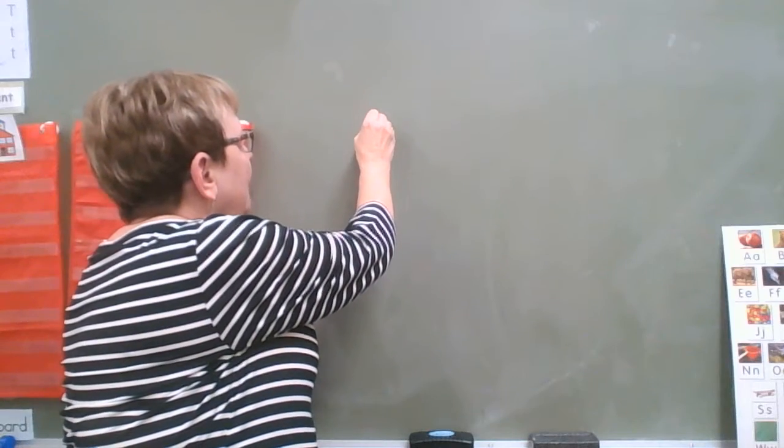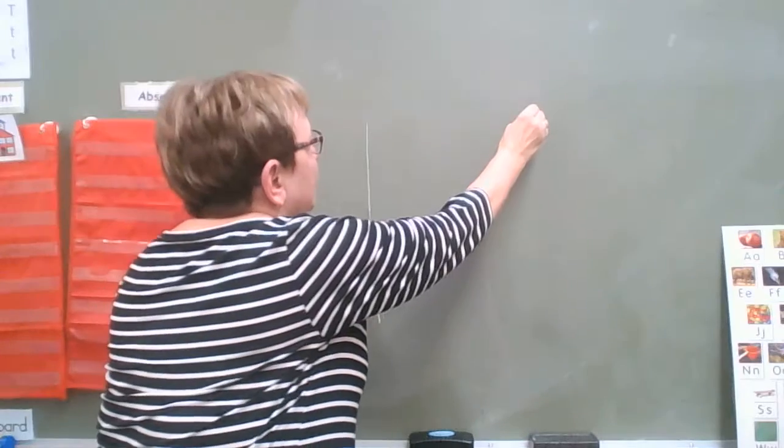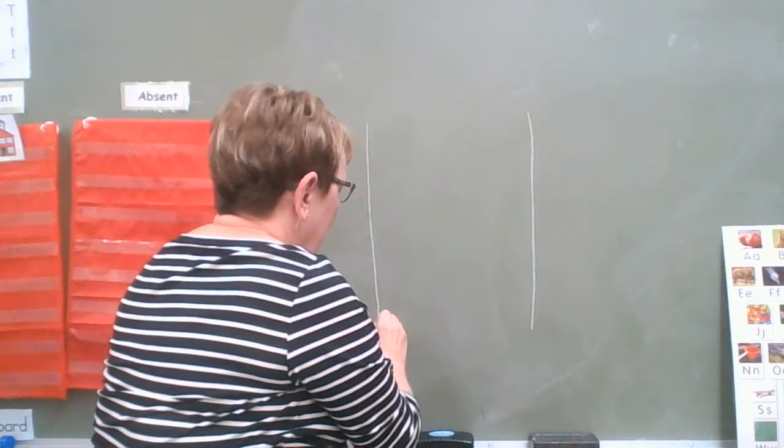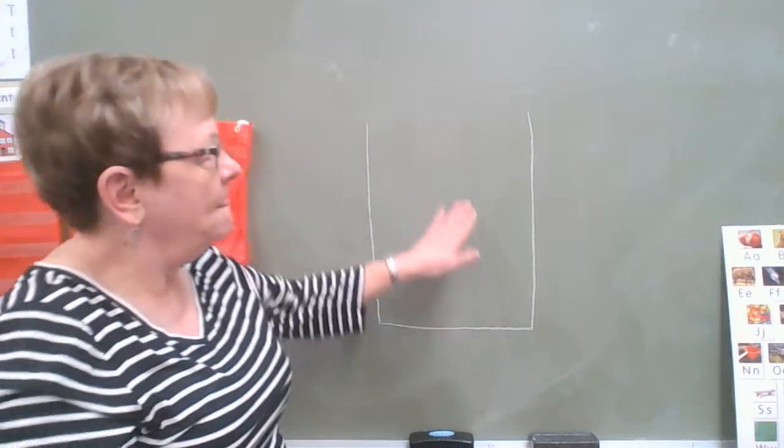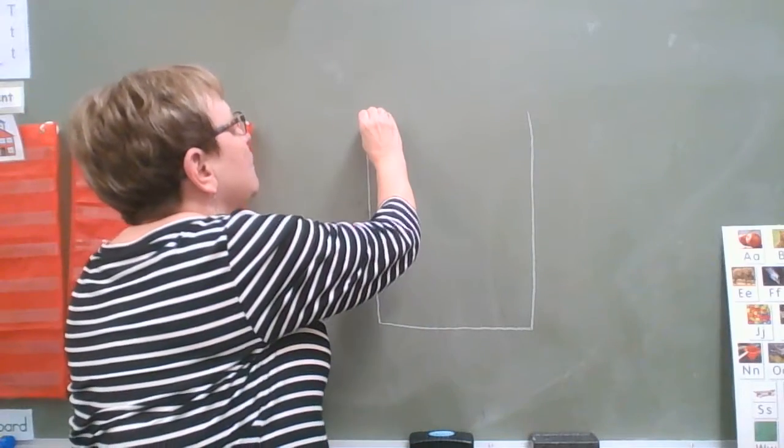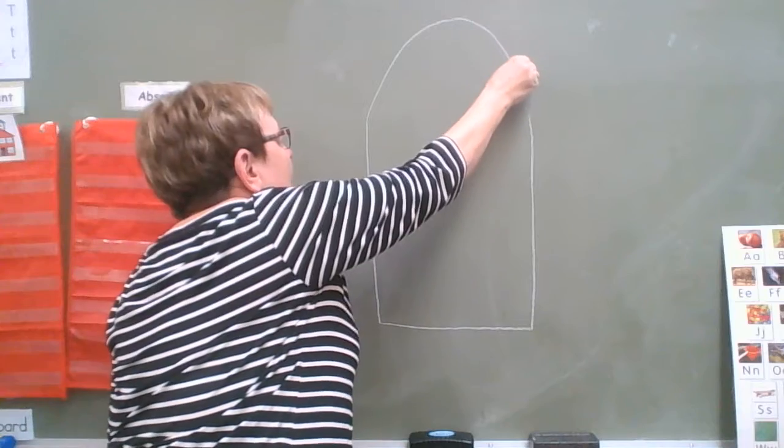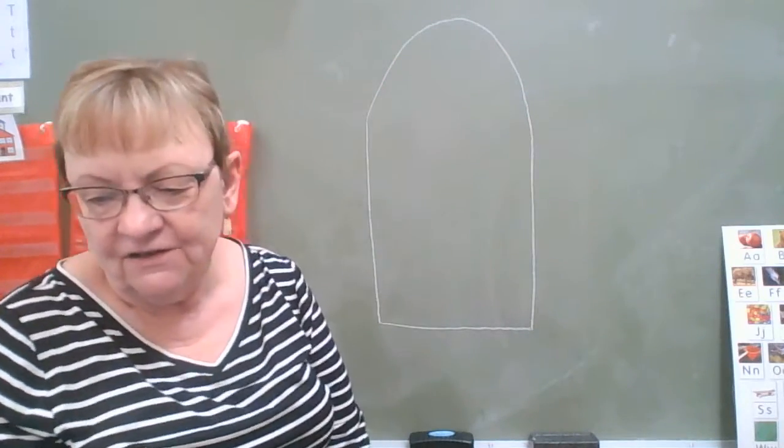So I'm going to start with a line down like this and another line right about there. And then I'm going to make a line across. That's the bottom. Now at the top I don't want a straight line. We're going to do a curvy line and curve it up. That's his head. Now we have his body with his head. Good.